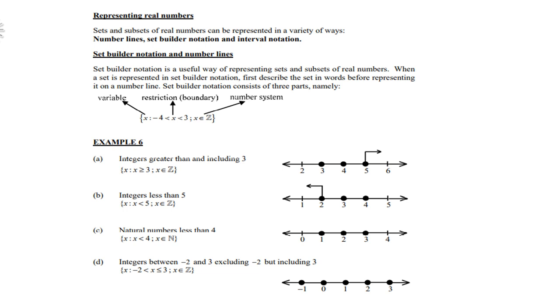Look at c, natural numbers less than 4. Now remember, what are natural numbers? No fractions. So x < 4, no equal sign, so I must leave out the 4 and only show 3, 2, and 1. Why not 0? Because 0 is not a natural number. So it's only 1, 2, and 3.